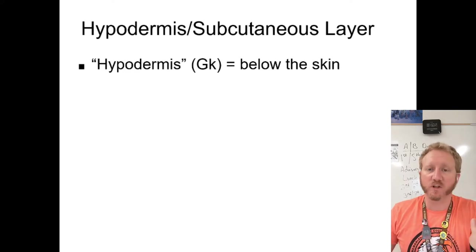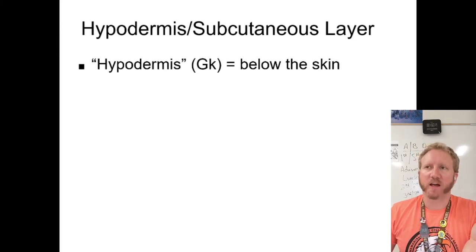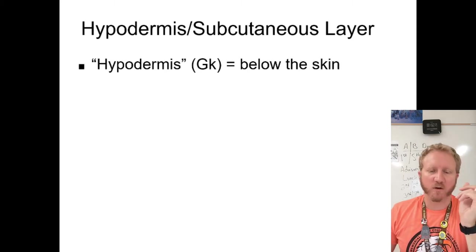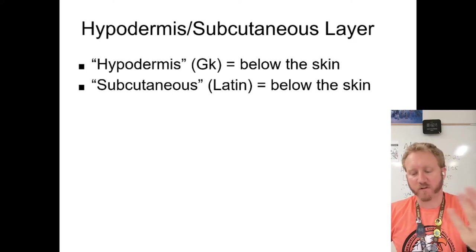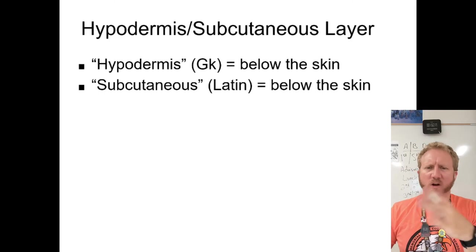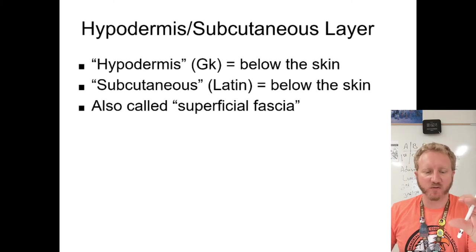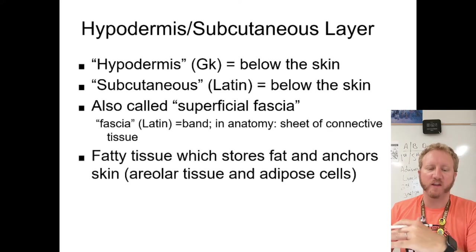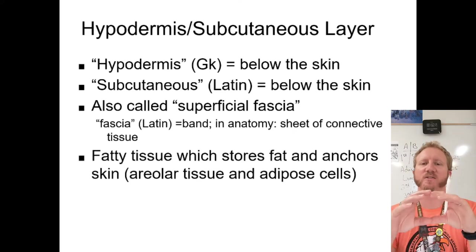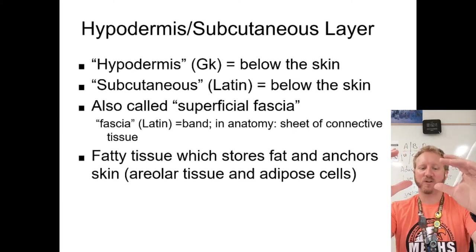Beneath the dermis is the hypodermis — Greek for 'below the skin,' also called subcutaneous or 'sub-Q.' Doctors and vets use sub-Q for injections — they pinch up the skin and inject into this layer. It's also known as the superficial fascia — a band of connective tissue that holds everything together.